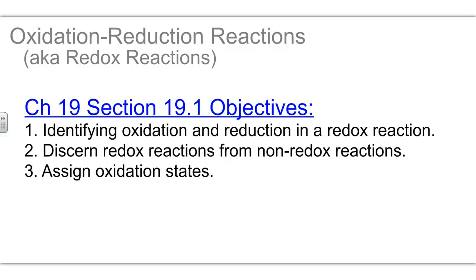Chapter 19, section 19.1. We're going to look at redox reactions, identify the oxidation and reduction part of a redox reaction, tell whether or not a reaction is in fact redox or not, and then learn how to assign oxidation states.